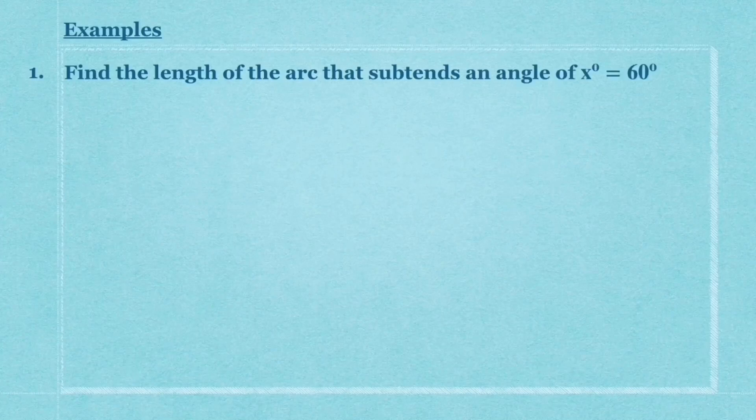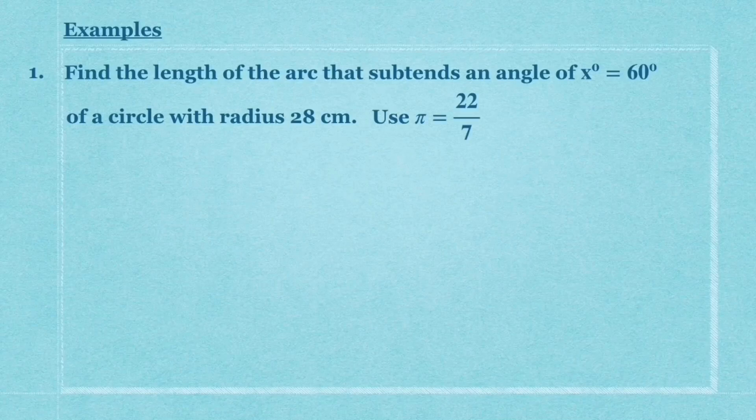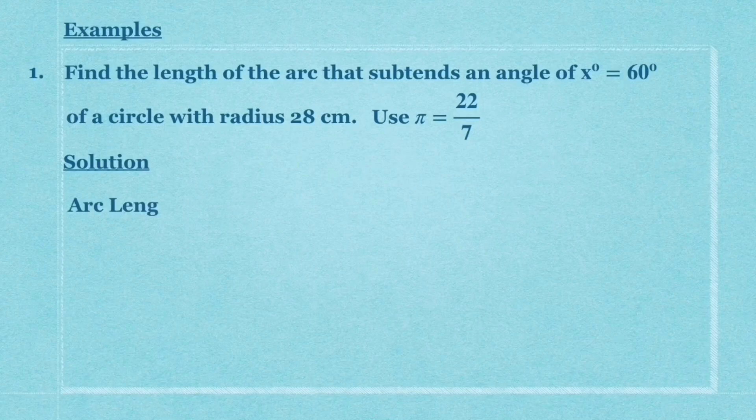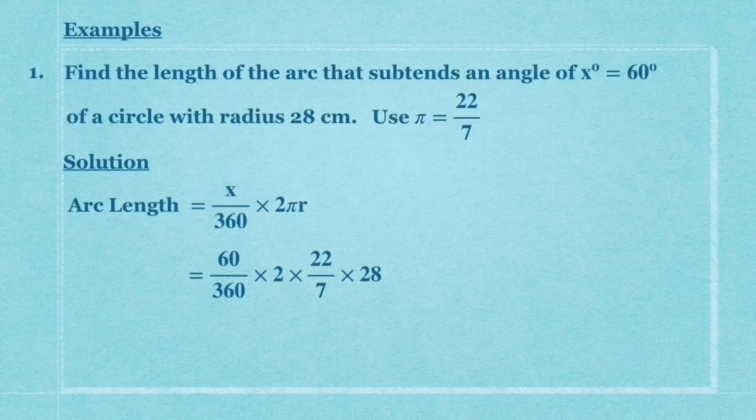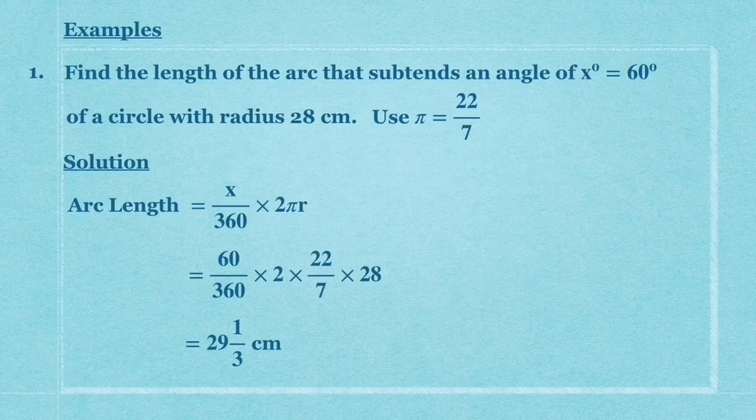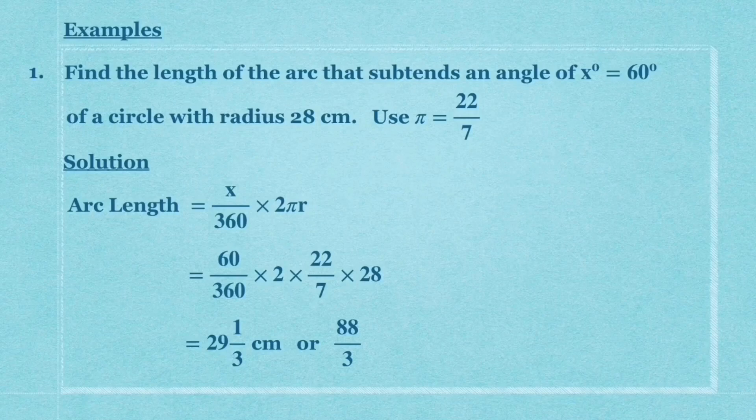The first example: you want to find the length of the arc that subtends an angle of x equals 60 degrees of a circle with radius 28 cm, using π = 22/7. First, write down the formula: arc length = x/360 × 2πr. Then substitute all the values: 60/360 × 2 × 22/7 × 28 cm. Use your calculator and you get the final answer, which is 29⅓ cm or 88/3 cm. Don't give the answer in decimal.